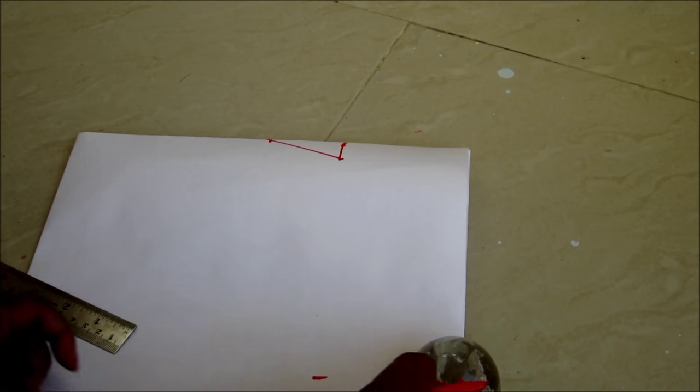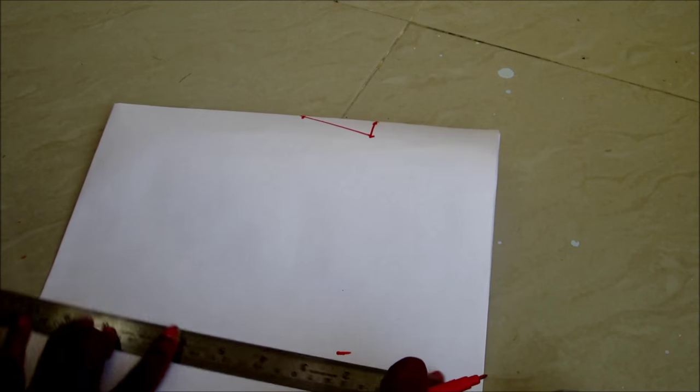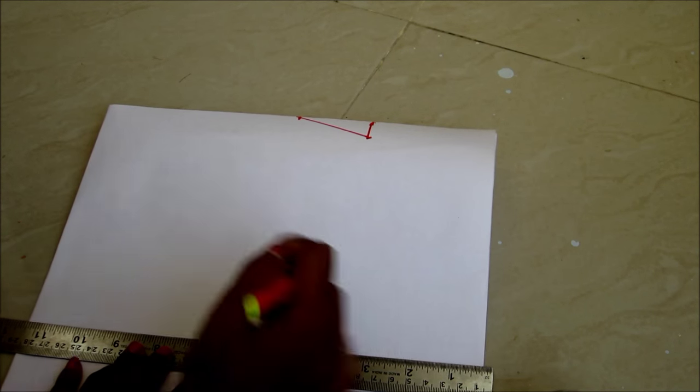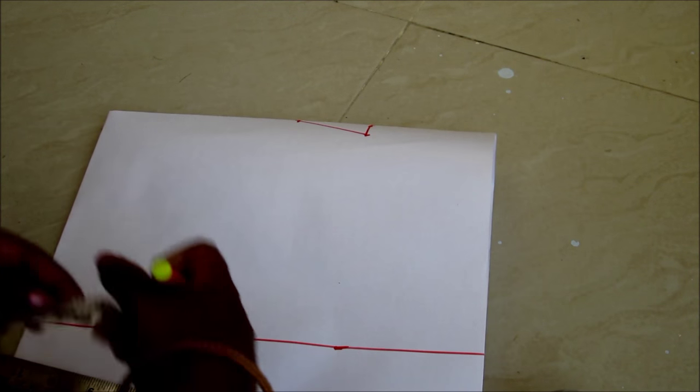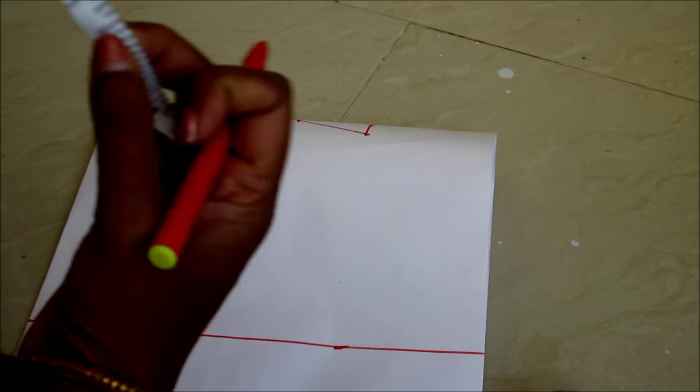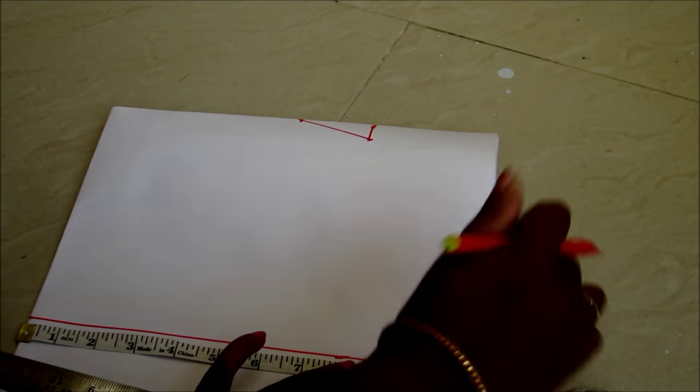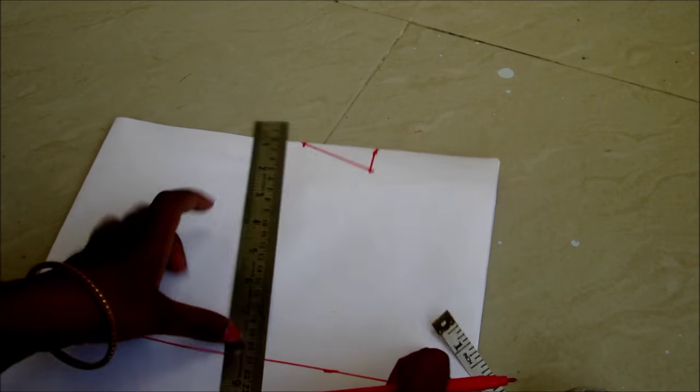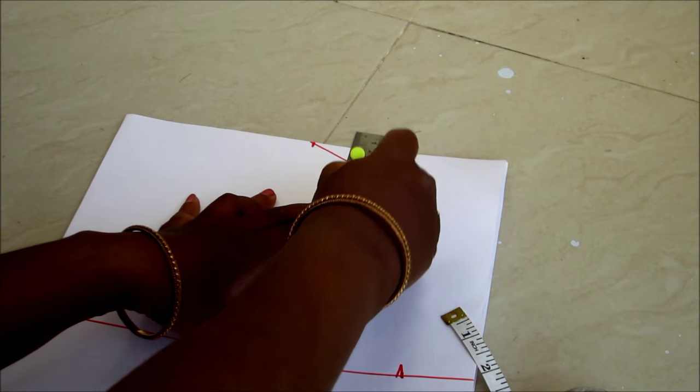Draw a straight line on the marked point. On this line, mark your chest length. Here I am marking 9.5 inches.